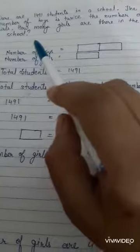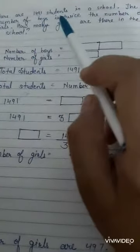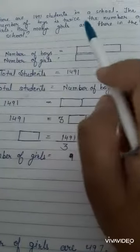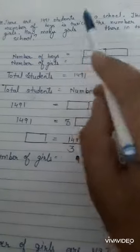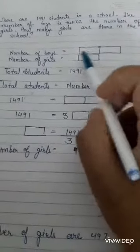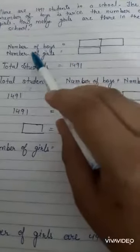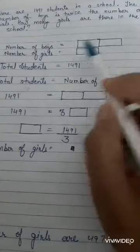This means number of boys is just double the number of girls. So we have to find the number of girls in the school. Number of boys are just double.